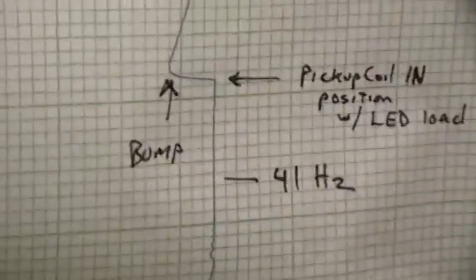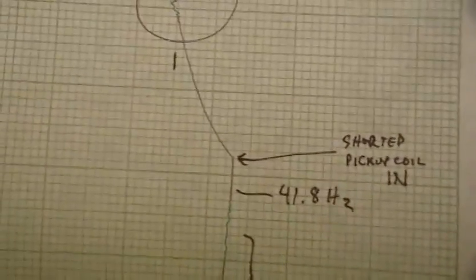41Hz times 15 is the RPM. Pick up coil short — that'd cost something. Shorty pick up coil out. Shorty pick up coil in. 42Hz times 15 is the RPM. Power off.